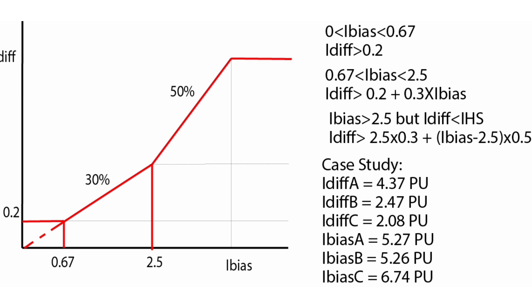For the tripping region: in the first region, up to a bias current of 0.67 per unit, the differential current must be greater than 0.2 per unit for the relay to send a trip signal. For bias current greater than 0.67 and up to 2.5 per unit, the differential current must be greater than 0.2 plus 0.3 times the bias current for the relay to give a trip signal.